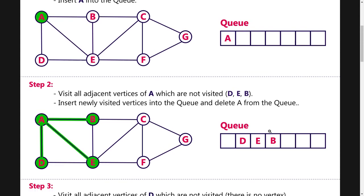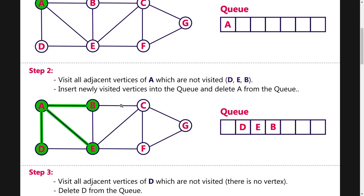Next, visit all adjacent vertices of D which are not visited. We have deleted A, and now D is at the front of the queue. Looking at node D, A and E have already been visited, so D has no non-visited adjacent nodes. Therefore, we delete node D from the queue.